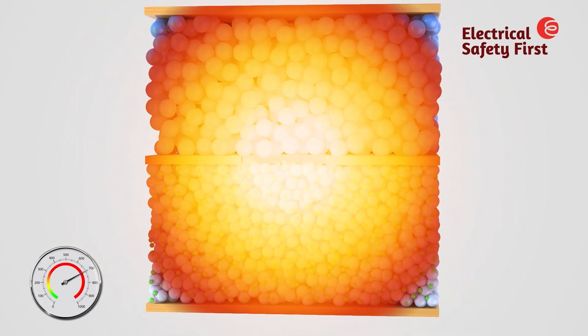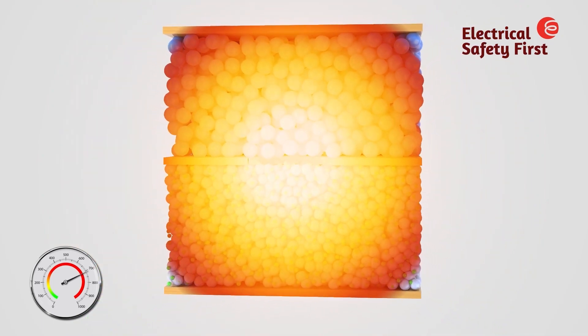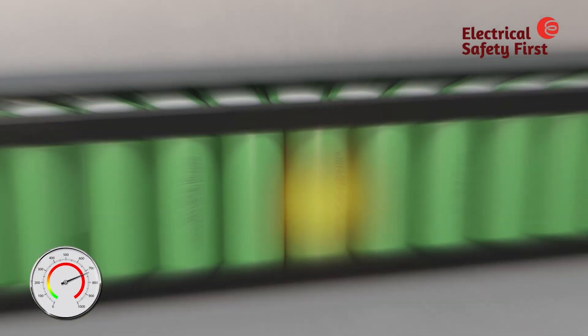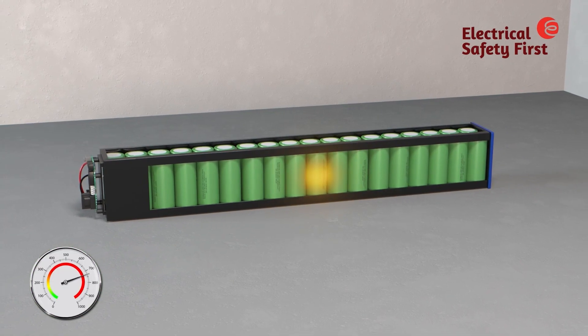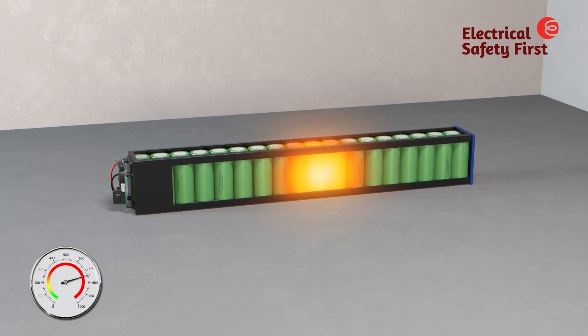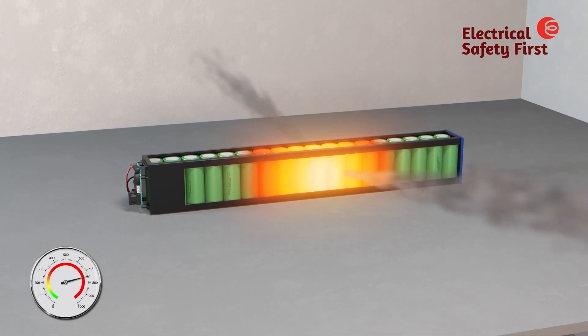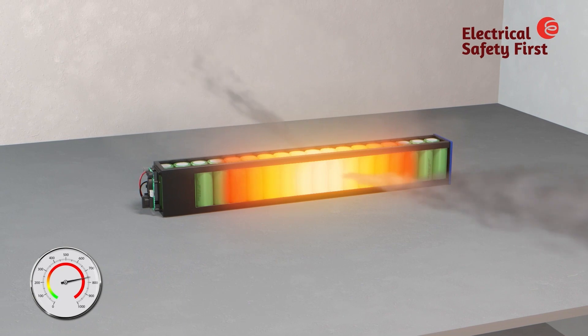The internal structure of the cell becomes unstable, leading to breakdown and collapse. The rise in temperature in a single cell will begin to affect cells in close proximity, creating a domino effect. Thermal runaway is now spreading to the other cells.